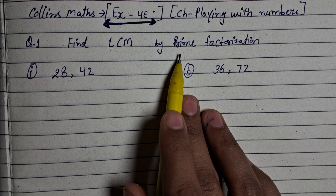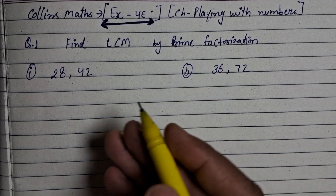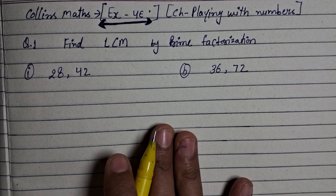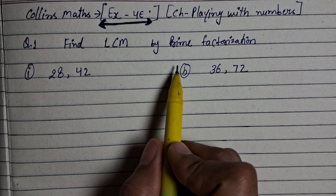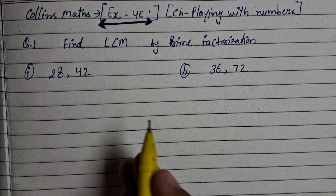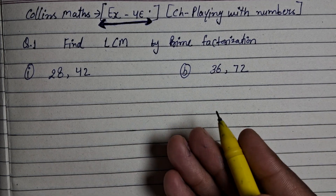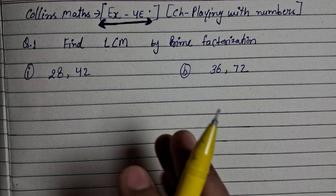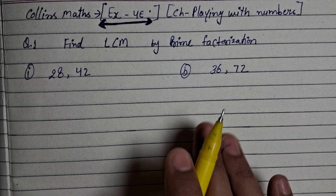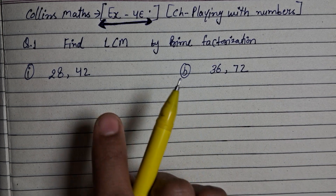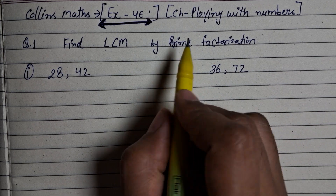You will know what a prime number is. A prime number is the number which has only two factors — one is one and one is the number itself. Like the smallest prime number is two. Two has only two factors: one and two. So we have talked about prime numbers.